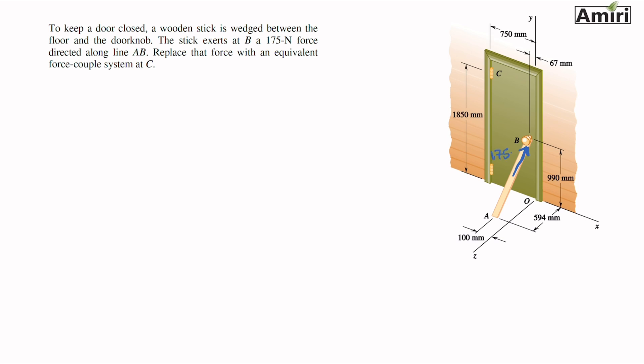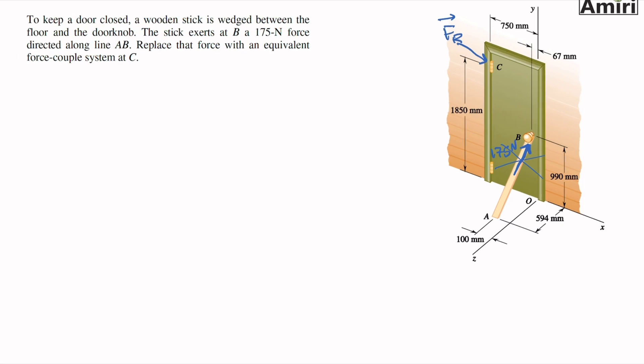So there is a force of 175 newtons in direction A to B. Replace this force with an equivalent force couple system at point C. So a force that's going to be at point C - I don't know which direction and what magnitude, so I'm just drawing a random direction, and a random couple as well. We have to calculate which direction they're actually pointing.